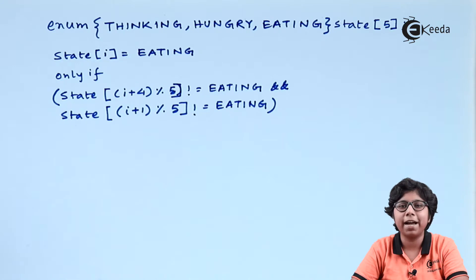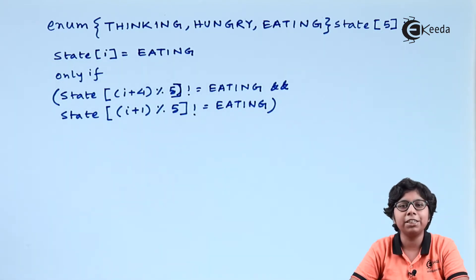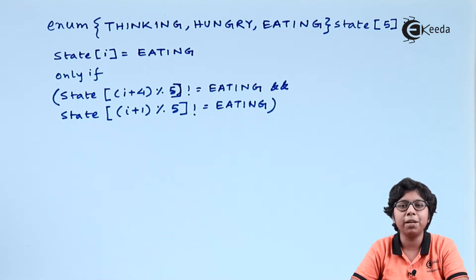We are now in a position to describe the dining philosopher's problem illustrated with a monitor. Each philosopher's distribution of chopsticks can be controlled by the monitor named dining philosopher. Each philosopher, before grabbing a chopstick, has to invoke the pickup operation. The pickup operation is performed after satisfying an if condition; if not satisfied, it delays the philosopher's process. After the philosopher grabs both chopsticks, she can perform eating, and after finishing eating she has to perform the put-down operation. The pickup and put-down operations must be in the following sequence.